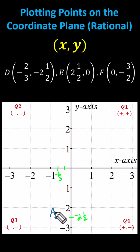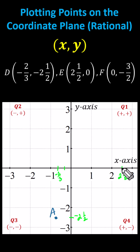Point E has coordinates two and a half comma zero, so x equals two and a half. Let's locate two and a half on the x-axis, which is right between positive two and positive three. To plot point E, because x is two and a half, we move two and a half units to the right from the origin. Because y is zero, we do not move up or down. Point E is this point here on the x-axis.